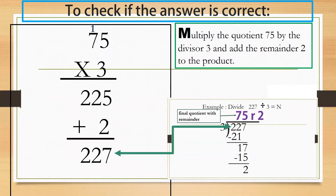To check if the answer is correct, multiply the quotient 75 by the divisor 3 and add the remainder 2 to the product. If the sum of the product and the remainder is the same as the dividend, then your answer is correct. Here, the sum 227 tallies with the dividend 227, so the answer is correct.